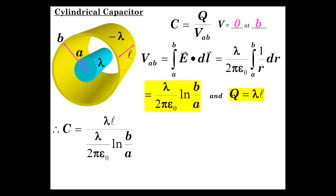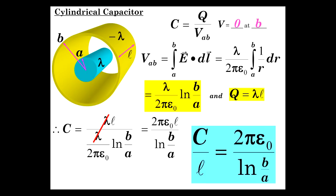So, C is equal to lambda L, the charge, over V_AB. Well, lambdas go away. And, we get 2 pi epsilon zero L over natural log of B over A. Which, if we divide by L, we have the capacitance per length of a cylindrical system. It's 2 pi epsilon zero over natural log of B over A. So, that's the capacitance per meter, so to speak.